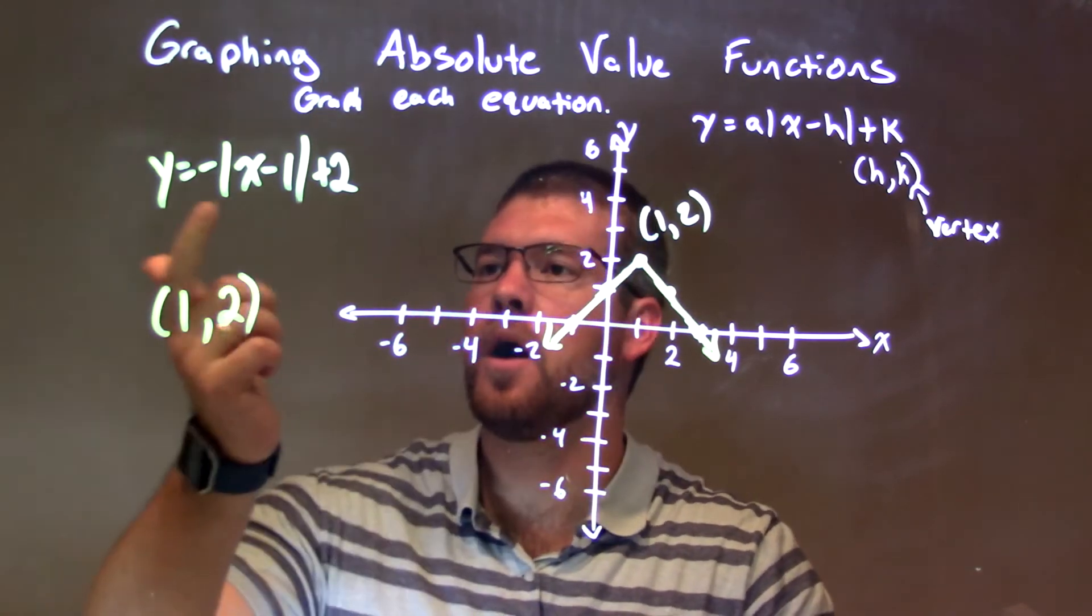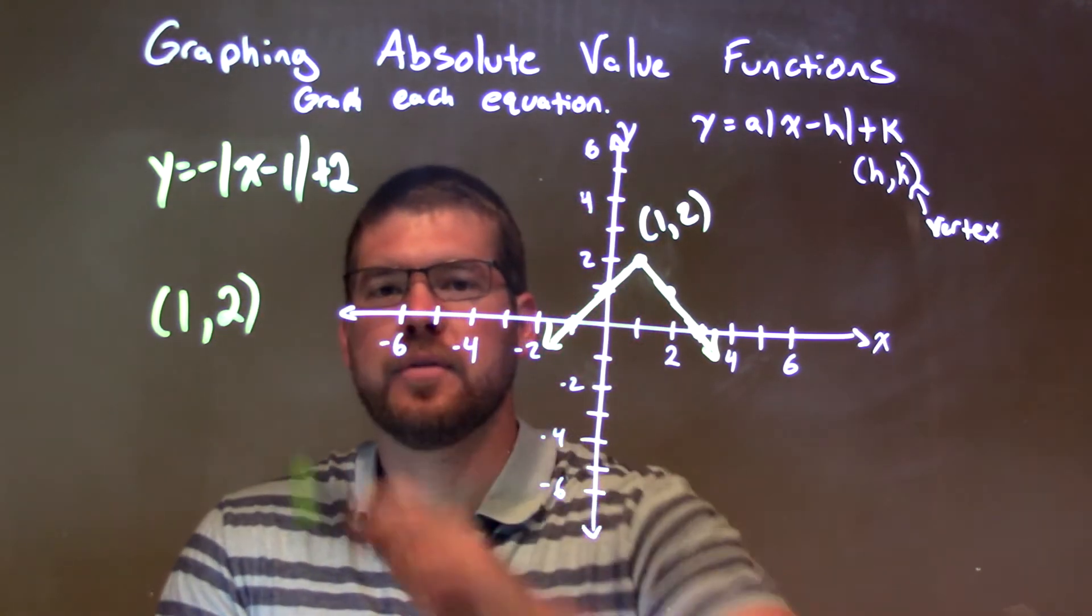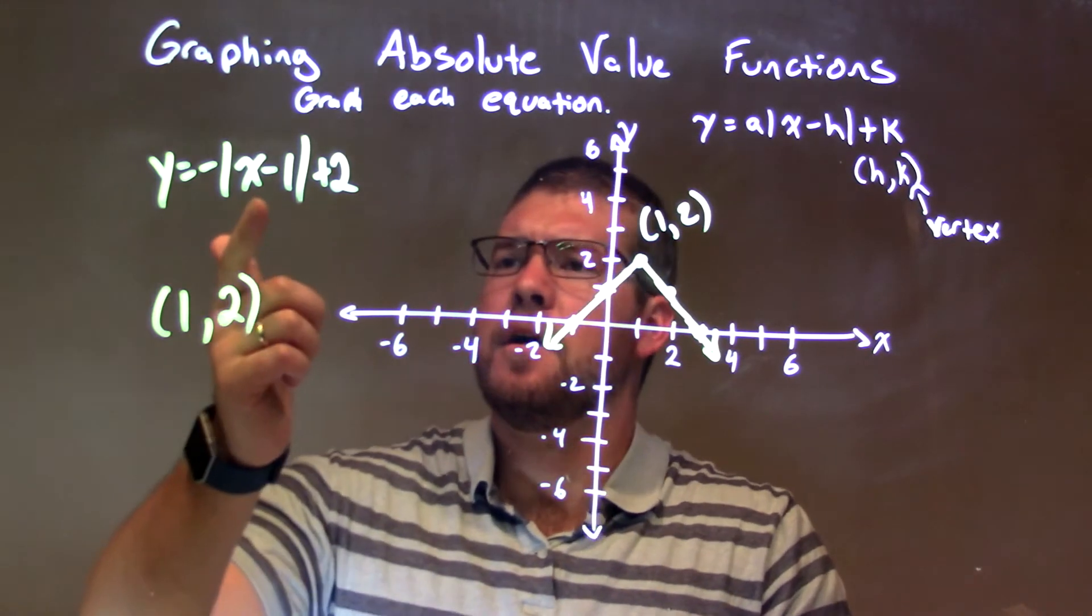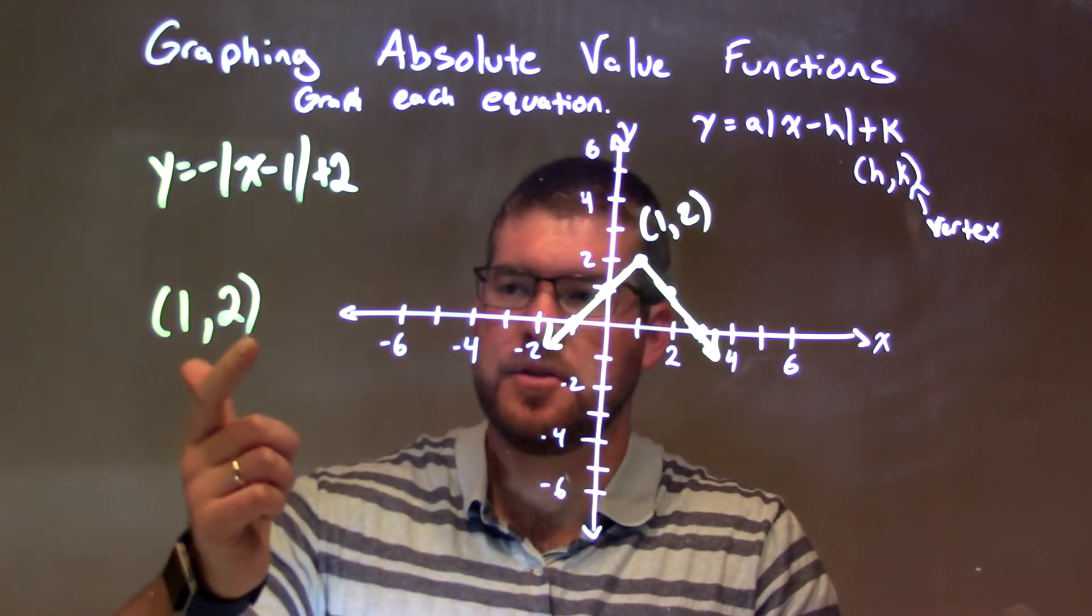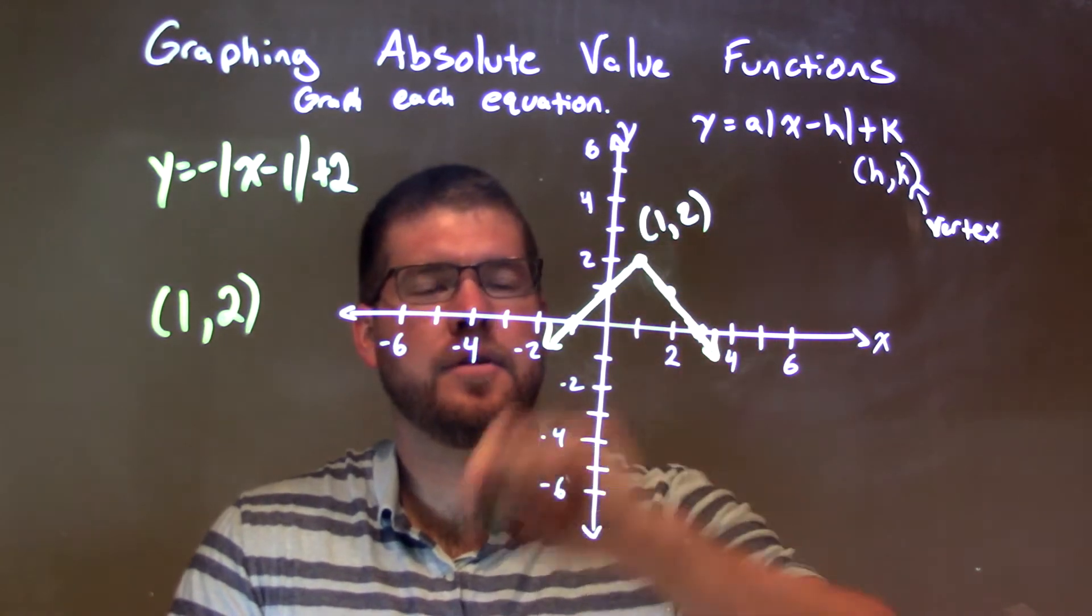So let's recap. We're given y equals negative absolute value of x minus 1, and then we have a plus 2 right there. We have to find our vertex, which is 1 comma 2. Got that right there. Vertex 1 comma 2. Then put that vertex right there.